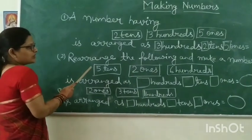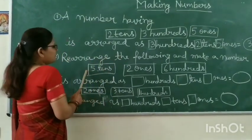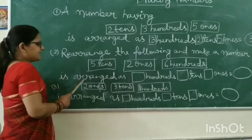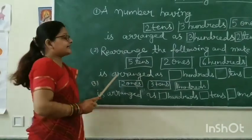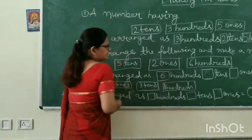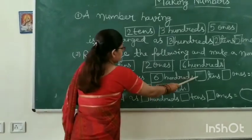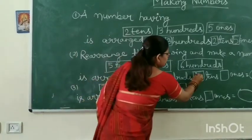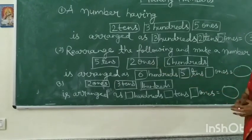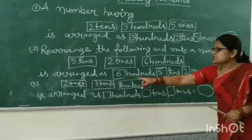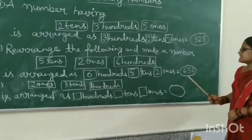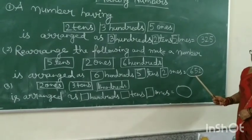Here is the goal: make a number using five tens, two ones, six hundreds. It is arranged as follows. First we write down the hundreds digit, which is six. Next we write the tens digit, which is five. Then we write the ones digit, which is two. So the number will be 6, 5, 2 — six hundred fifty-two.